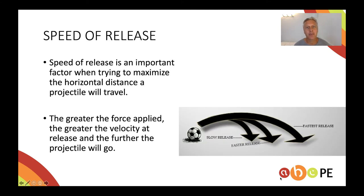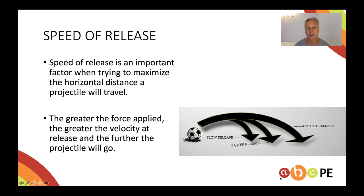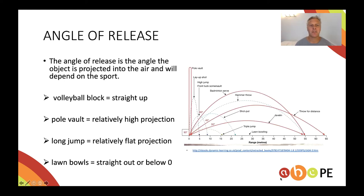Let's break it down into each of those factors. Speed of release is most important, obviously, when we're trying to maximize the horizontal distance that a projectile will travel — generally, the faster we can release it, the further it will go. Angle of release is the angle that the object is projected into the air and will vary completely on what you're trying to achieve and what sport you're playing.